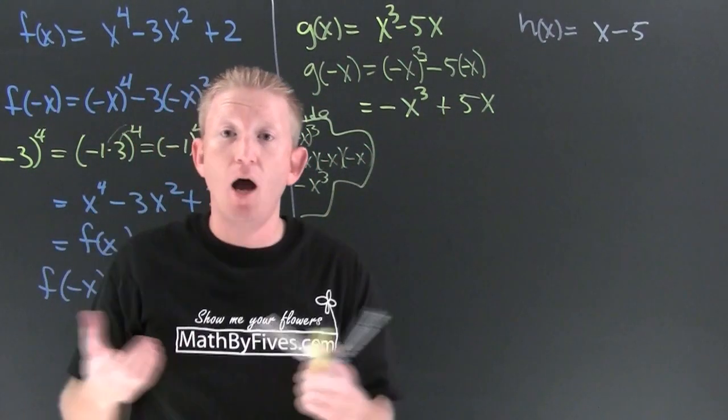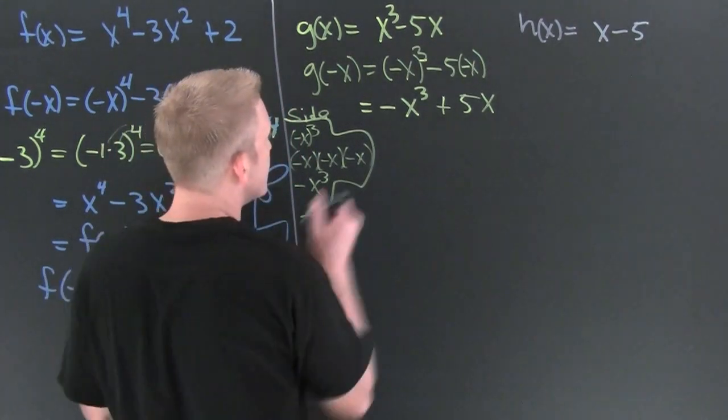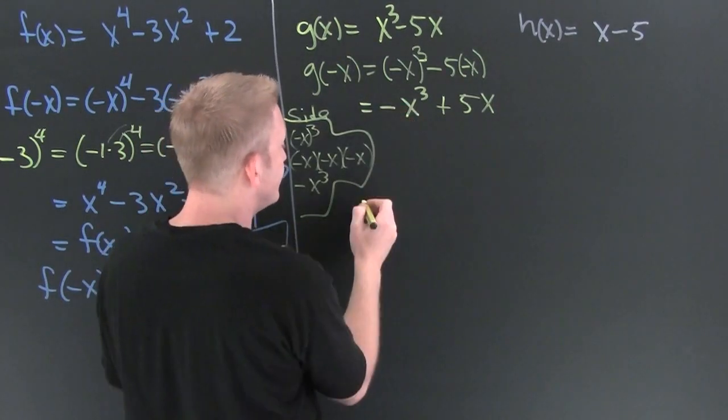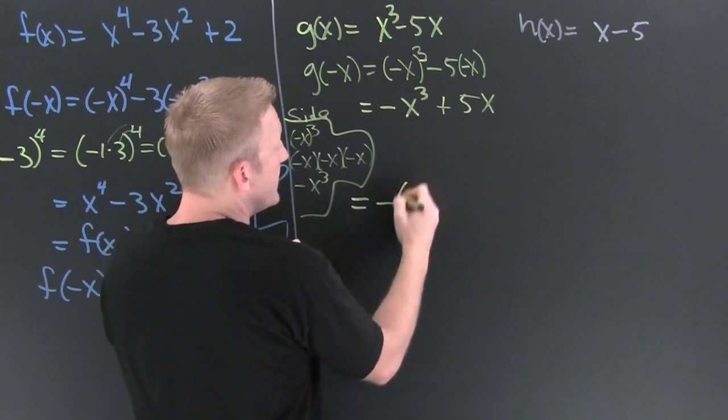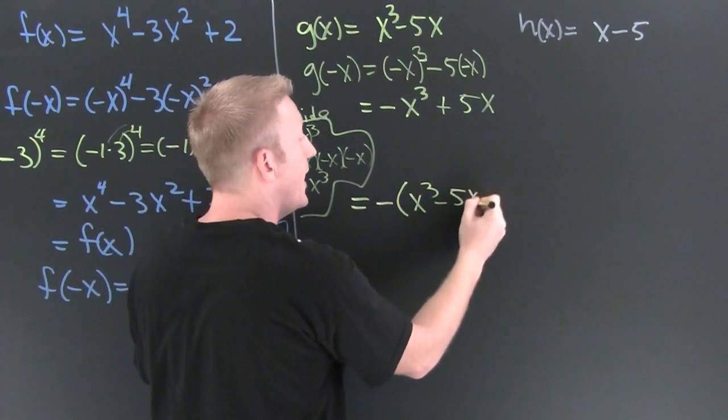Now what do I want to do? I want to try to go and try to find the original function. And in order to do that, what I am going to do is I'm going to pull out a minus sign. So I'm going to pull out a minus and then left over on the inside, I have x to the third minus five x.